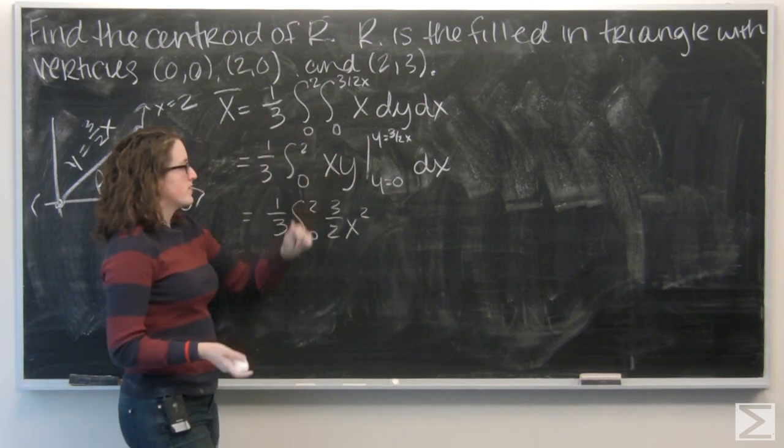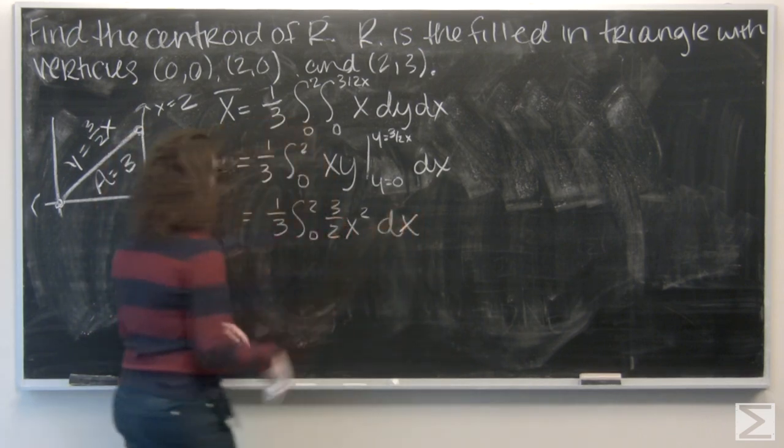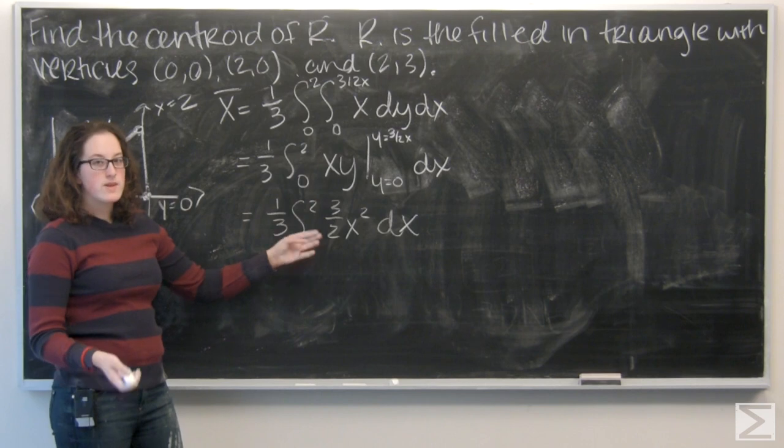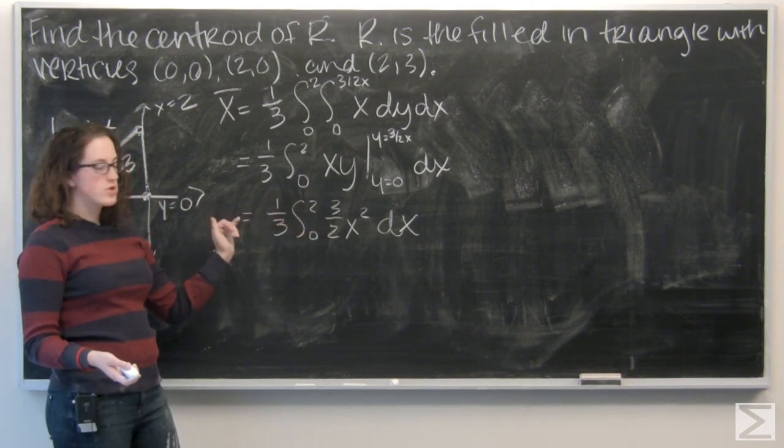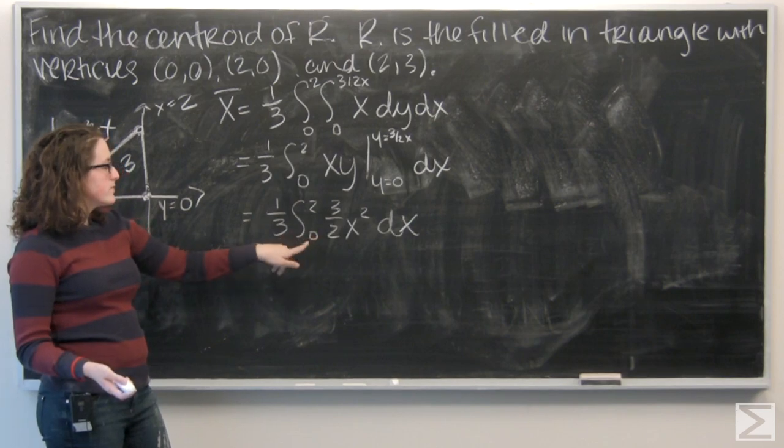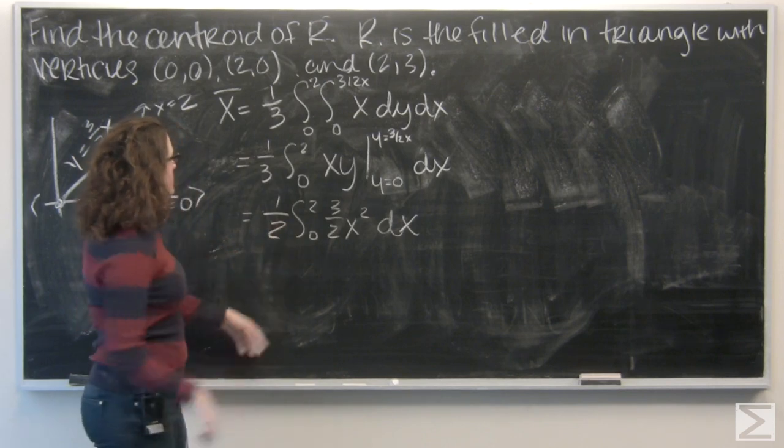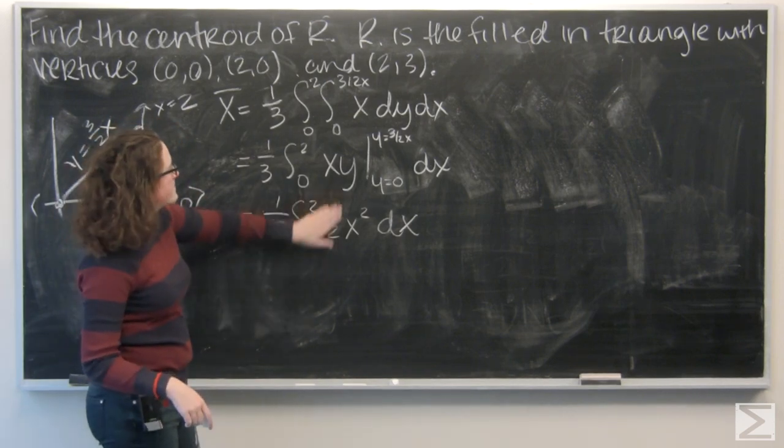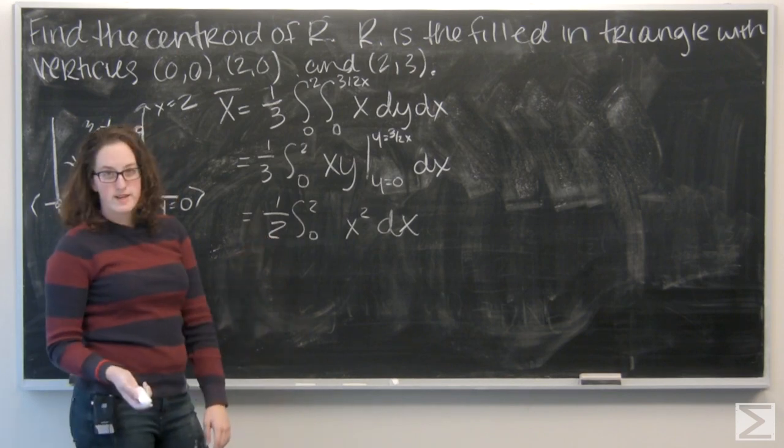And then, when I plug in 0, I'm going to get 0. Okay. I want to pull this 3 halves out of my integral. So, 3 halves times 1 third, 1 half. So, let me rewrite that on the outside of my integral and kill the 3 halves.